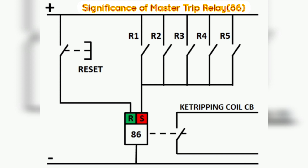Second, the use of a Master Trip Relay reduces the complexity of wiring. If the Master Trip Relay is not used, then we have to wire all trip contacts of the protection relays directly to the circuit breaker's trip coil. The output of the protection relays is 110 volts DC, and thus DC voltage routes into the breaker for each protection relay, increasing chances of DC voltage leakage. This reduces the reliability of the protection system, and a lot of wiring causes more cost.